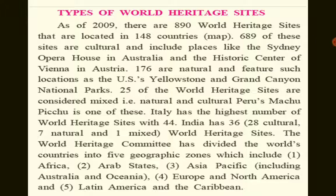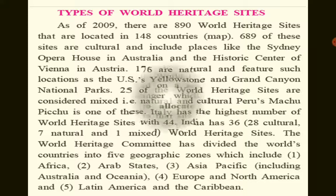The World Heritage Committee has divided countries into five geographic zones: first, Africa; second, Arab states; third, Asia Pacific including Australia and Oceania; fourth, Europe and North America; and fifth, Latin America and the Caribbean.